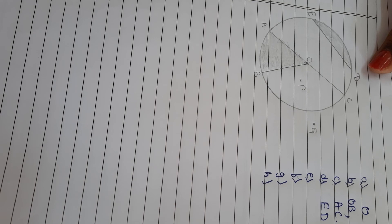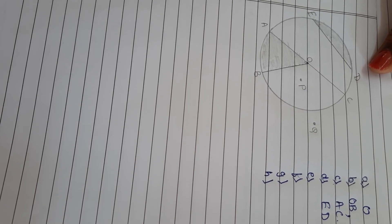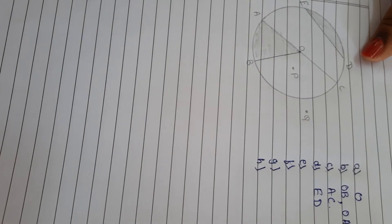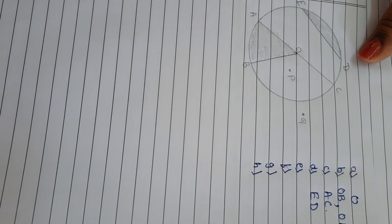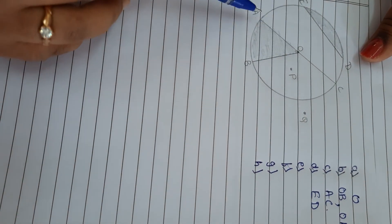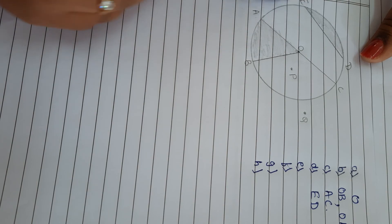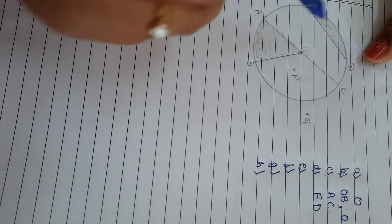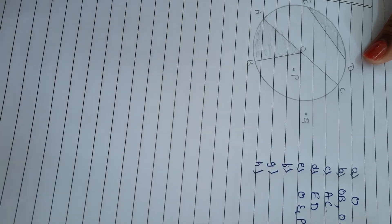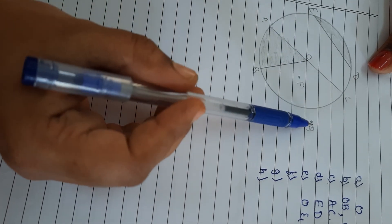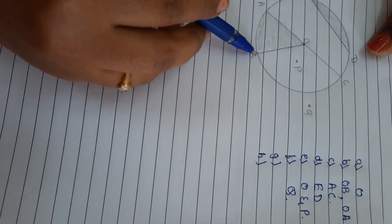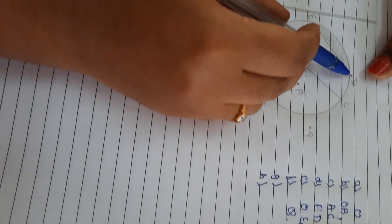Next, E — two points in the interior. Interior means inside the circle. Inside the circle, how many points are there? P and O. A student asked about the other points — those are all on the line. Only O and P are inside the circle. F question: a point in the exterior — exterior means outside the circle. Outside the circle, only Q. Point Q. The other points are on the line, so they neither come in interior nor exterior.